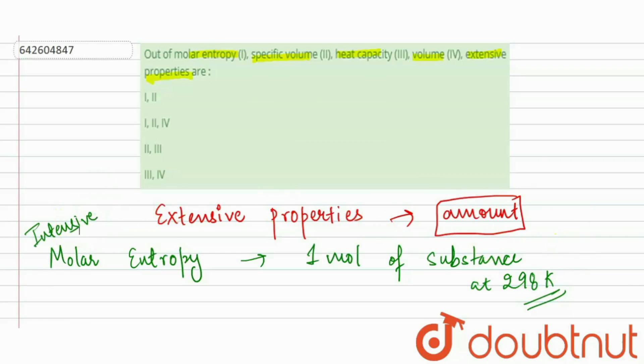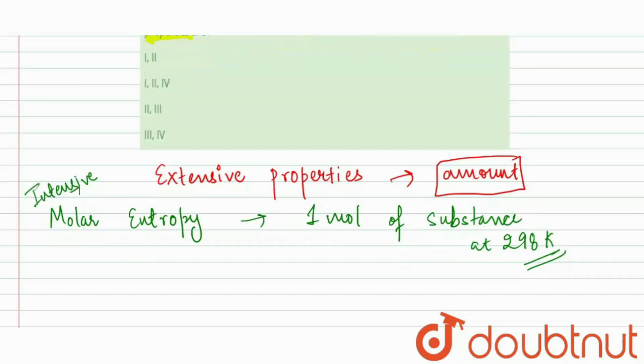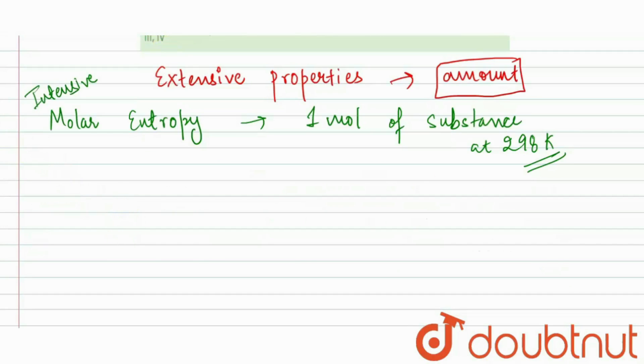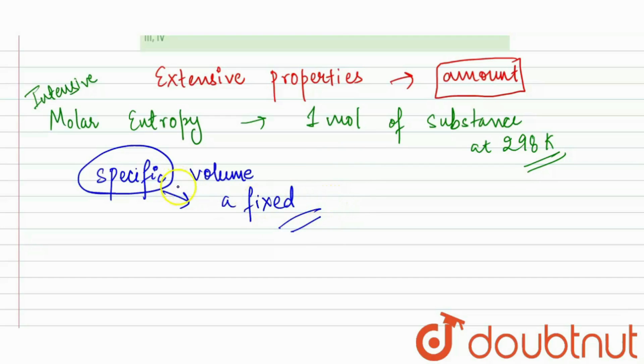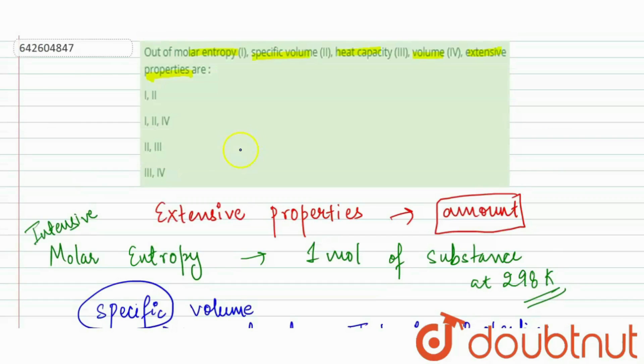Now, if we talk about the specific volume. Specific volume means that in this case the volume. Specific means something of a fixed amount. Like if I am saying that 10 milliliters of volume, then it will be a fixed amount. Our specific volume is also an intensive property because in this the factors are constant. Our first and second, these are intensive.